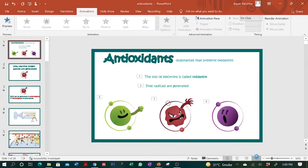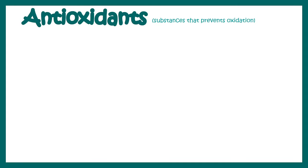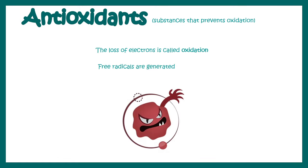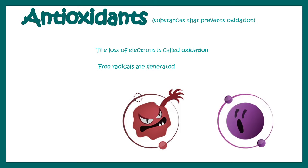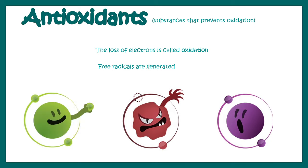In this video we will talk about antioxidants, which are substances that prevent oxidation. The loss of an electron is known as oxidation, and as a result of oxidation, free radicals can be generated — these are electron-hungry species that can literally snatch electrons from other molecules. Antioxidants are molecules which can donate electrons to these reactive oxygen species, calming them down and saving our body from their harmful effects.